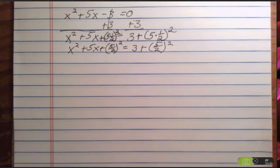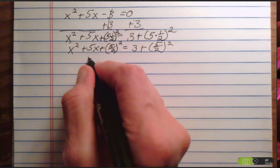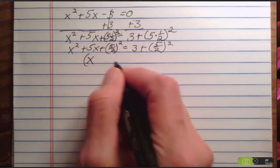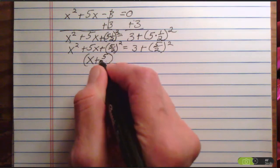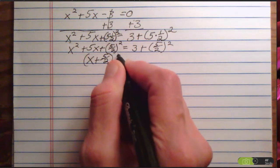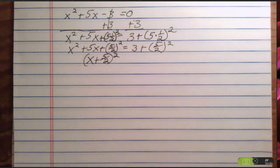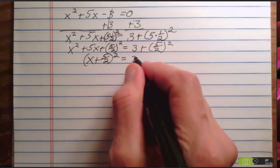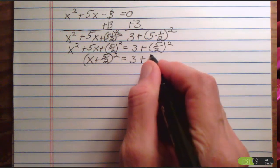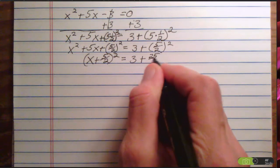Now, remember what we did last time. The shortcut is to write your binomial like this: (x + 5/2)² = 3 + 25/4.